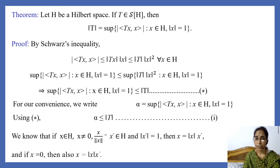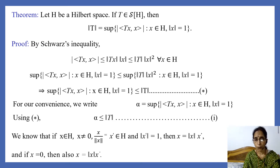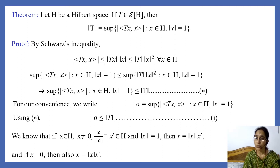For convenience, we denote the left-hand side expression — that is, sup over x in H with ‖x‖=1 of |⟨Tx, x⟩| — by α. Then we can write α ≤ ‖T‖. Since we want to show that ‖T‖ = α, we need to establish the reverse inequality.